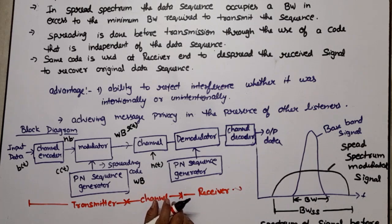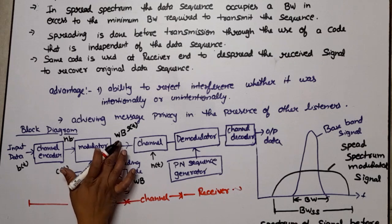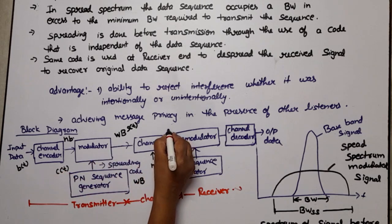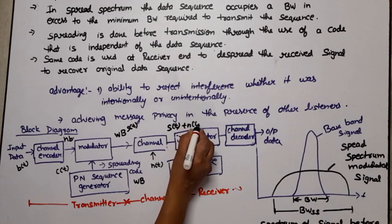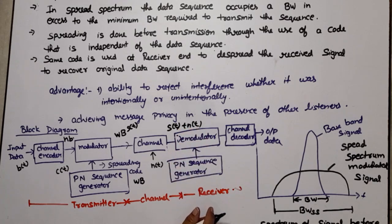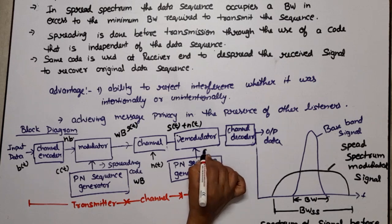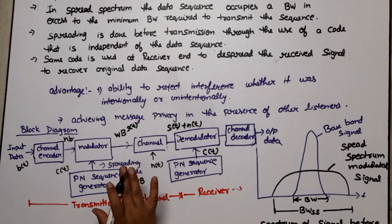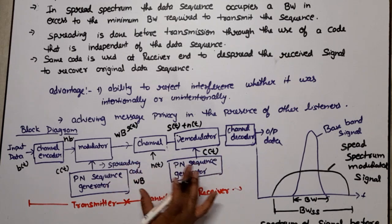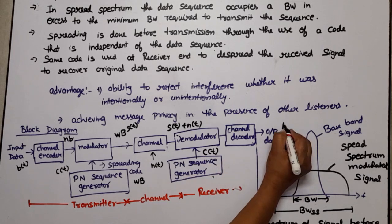Now when signal passes through channel, noise will be added. Let noise be NT. So when signal is received at demodulator it will be ST plus noise. Now here we again use sequence CT for demodulation. After demodulation and channel decoder, the output we get will be input sequence plus noise.